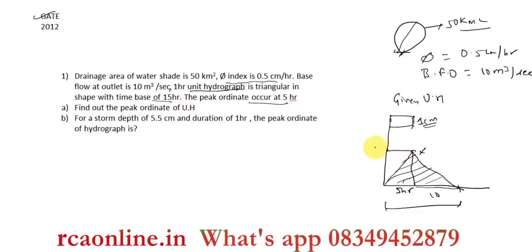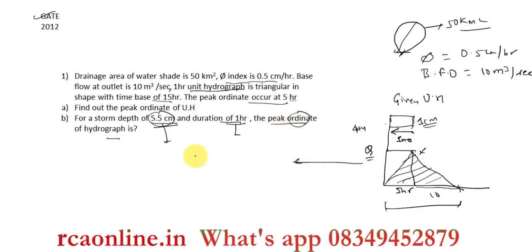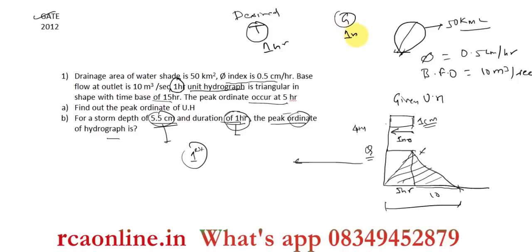For a storm depth of 5.5 centimeters with a duration of 1 hour, find the peak ordinate of the flood hydrograph. This requires moving from the fourth step back to the first step of the process flow diagram. Before solving, check the given duration versus the desired duration. The target duration is 1 hour and the given unit hydrograph duration is also 1 hour.